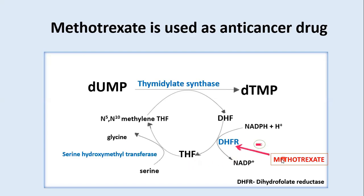Thus, Methotrexate controls the growth of cancer cells by inhibiting thymidylate synthase, reducing the supply of deoxythymidylate which is needed by the rapidly dividing cancer cells for the synthesis of their DNA. Thus, Methotrexate is used as an anti-cancer drug.